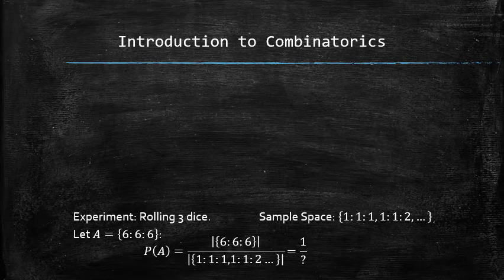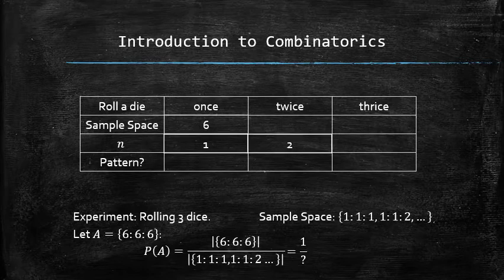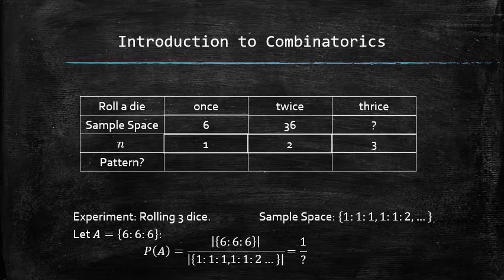Let's try to figure out the pattern by filling out the following table. Hopefully we can figure out the size of the sample space for rolling 3 dice. When there is only 1 die, there are 6 outcomes in the sample space. When there are 2 dice, there are 36 outcomes. So how many outcomes are in the sample space when there are 3 dice?